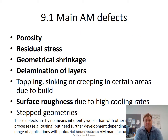The main additive manufacturing defects are porosity, residual stress, geometrical shrinkage, delamination of layers, toppling, and sinking or creeping of certain areas due to the build. We also have quite high levels of surface roughness due to the high cooling rates. We're going to talk about step geometries and the relationship between the discrete nature of layer thickness and its effect on surface roughness and part geometry.